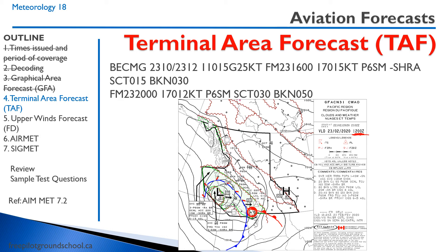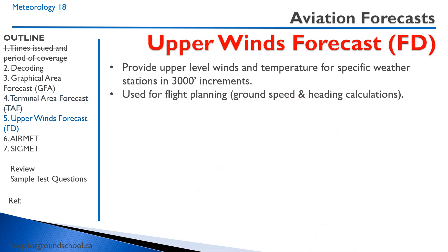At 1200 Zulu — 12 hours later — the frontal system is right in the midst of Vancouver. By 1200 Zulu: wind 110 at 15 gusting 25, gusty because the isobars are closer together as the low approaches. From 1600 Zulu: light rain showers. Once the system clears, it's broken at 5,000, scattered at 3,000. By 2000 Zulu — eight hours later — it'll be mostly clear behind the cold front.